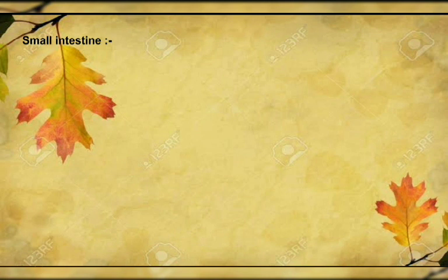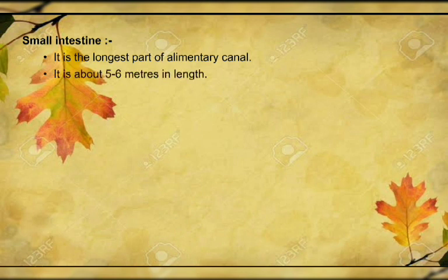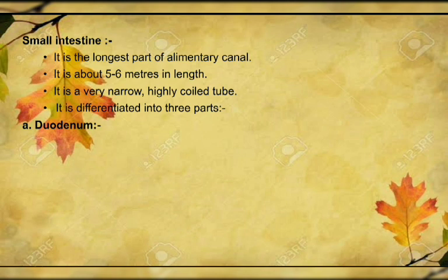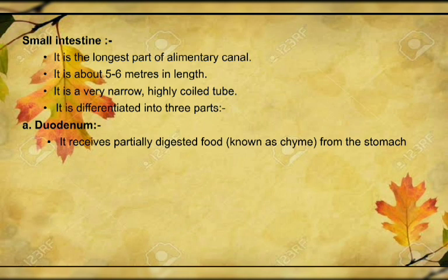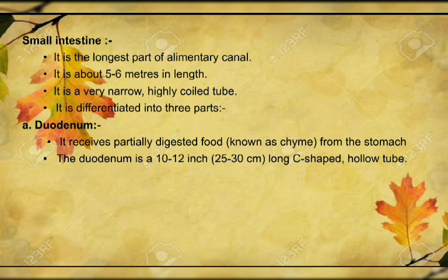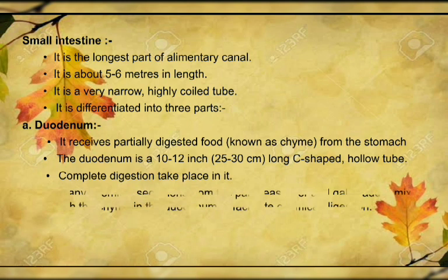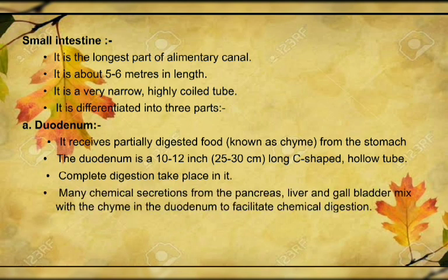The small intestine is the most important part and also the longest part — about five to six meters in length. It is divided into three categories: duodenum, jejunum, and ileum. It is a narrow, coil-like structure. The duodenum is the most and most important part because complete digestion takes place in it. It is C-shaped, about 10 to 12 inches or 25 to 30 cm. When food mixes with saliva it is called bolus; when bolus enters the stomach and combines with gastric juice it is called chyme. All the chemicals from the gallbladder and pancreas are secreted into the duodenum, so complete chemical digestion takes place there.